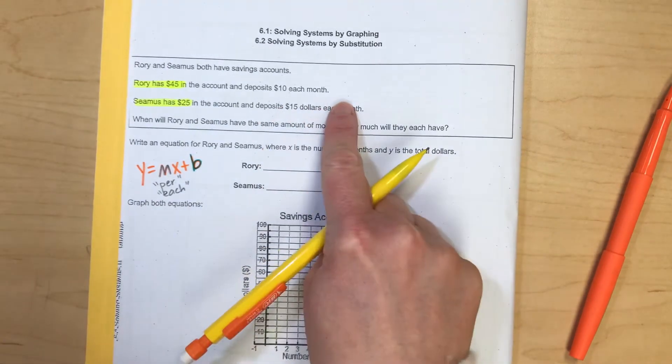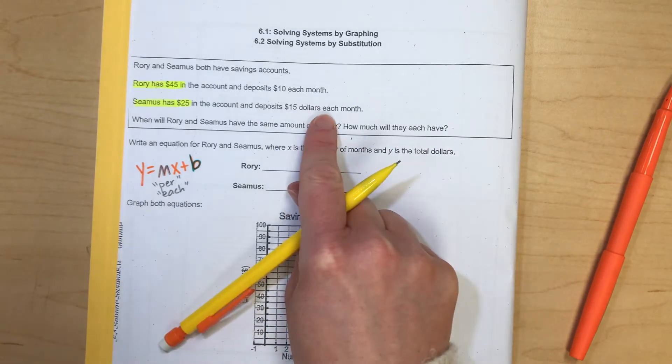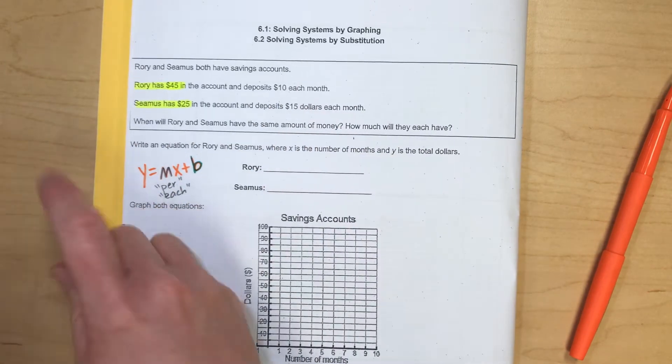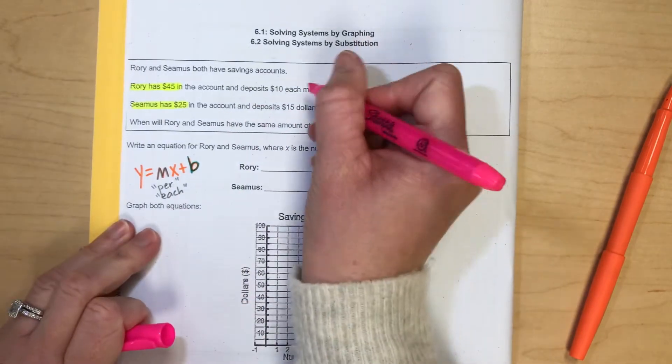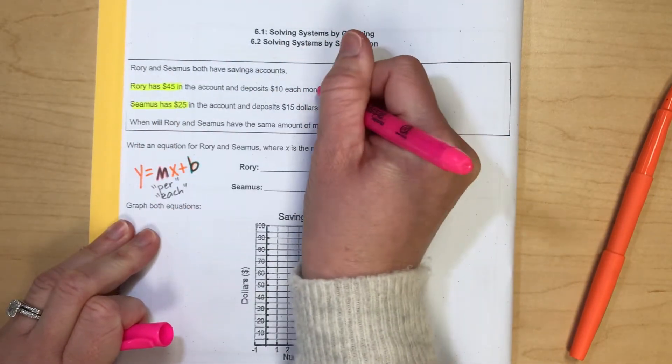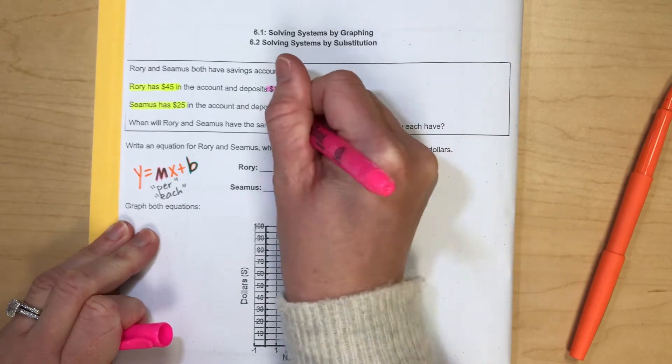The changing is $10 per month. The changing is $15 per month. So now I know the slope for each of those equations. This is going to be our M here for Rory and our M here for Seamus.